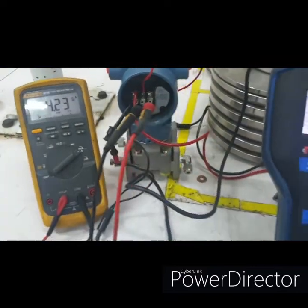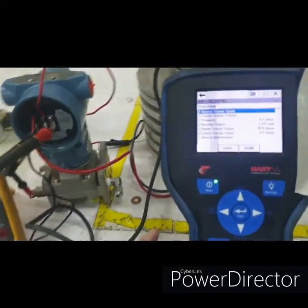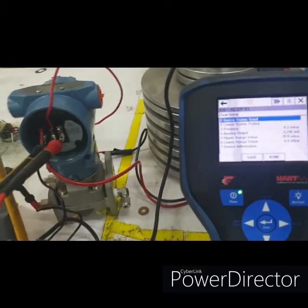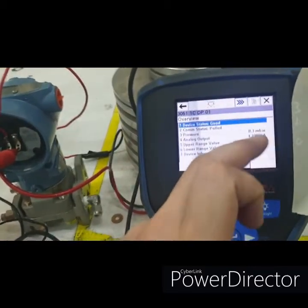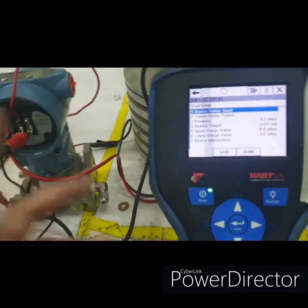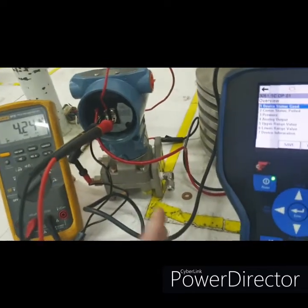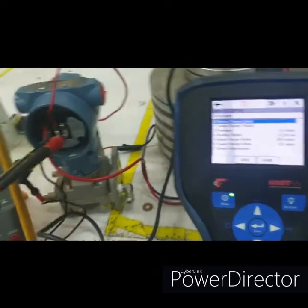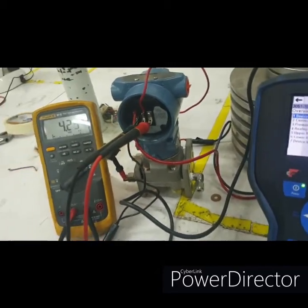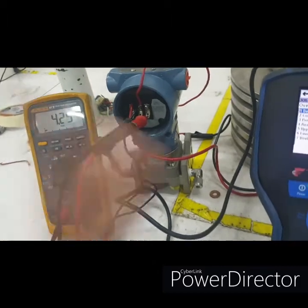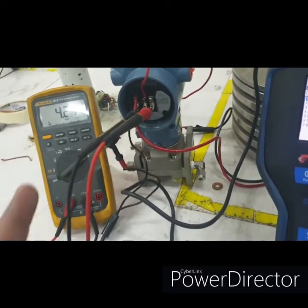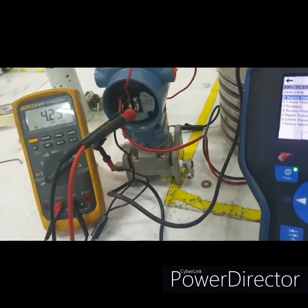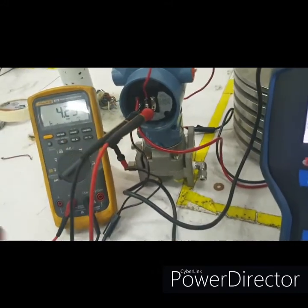It is expected to be 4 milliamps because this is the 4 to 20 milliamp signal standard. But anyway, later on we will show you how to do the trimming, how to trim the signal, the sensor trim, and the output trim.